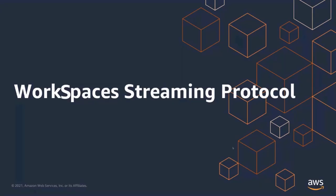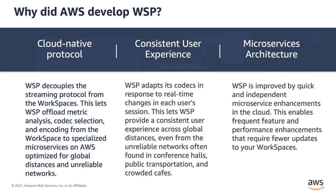Thanks, Subra. I'm here to talk to you about the Workspaces Streaming Protocol. At AWS, 90% of our roadmap is based on customer feedback. Since the launch of Amazon Workspaces, we've seen increased demand for increased security features such as smart card authentication and the ability to contain audio and video data streams inside the virtual operating system. To improve our ability to control development and delight our customers, we've invested in the development of the Workspaces Streaming Protocol. In developing a proprietary protocol, AWS is better positioned to innovate based on direct customer feedback, delivering more frequent and targeted features. WSP decouples the streaming protocol from the Amazon Workspace, allowing WSP to offload metric analysis and codec selection as well as encoding from the Workspace surface itself using specialized microservices on AWS-optimized endpoints for global distances and unreliable networks.